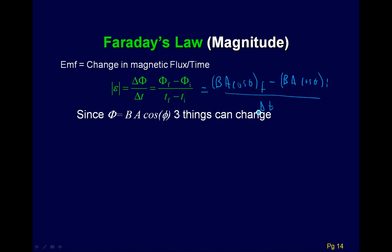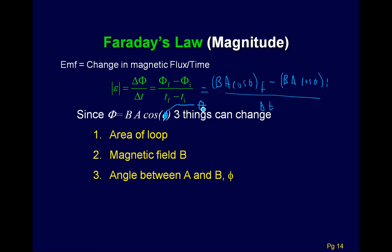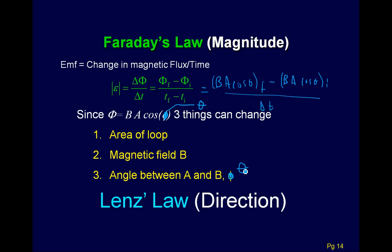The flux is B·A·cosθ. Three things can change: the area of the loop, the magnetic field strength, or the angle between A and B — called theta. You have to be careful which one is changing in your problem. We use Faraday's Law to get the number; we use Lenz's Law to find the direction.